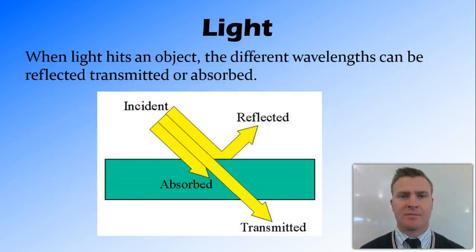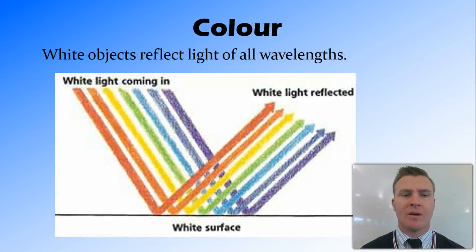When light hits an object, it can either be reflected, absorbed, or transmitted. And different wavelengths can be reflected, absorbed, or transmitted to different amounts. So what that means is that some wavelengths might be absorbed while others transmitted. This is where colour starts to come in.